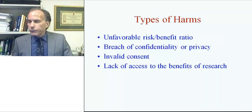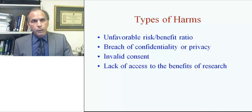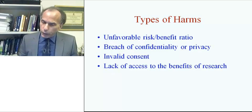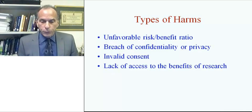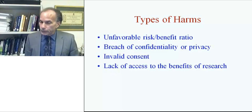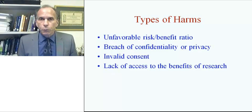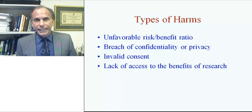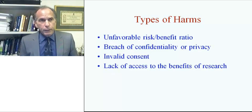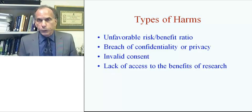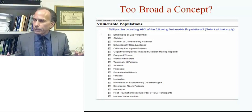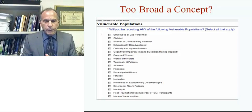Now, if one is vulnerable, what are the different types of harms that could befall vulnerable individuals? One could be due to an unfavorable risk-benefit ratio — so now we're talking about physical harms — or due to a breach of confidentiality or privacy, we're talking about social harms, and invalid consent, which means someone is being wronged as opposed to harmed if they are included in a research study with an invalid consent. Another type of harm includes if the vulnerable individual or group has a lack of access to the benefits of research.